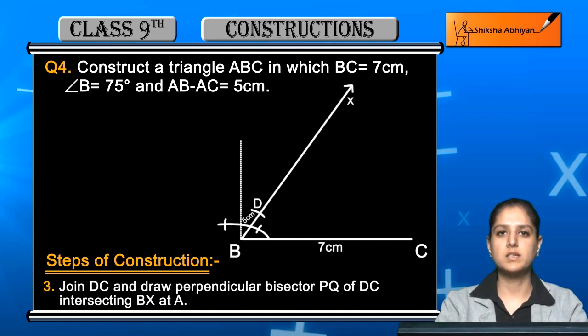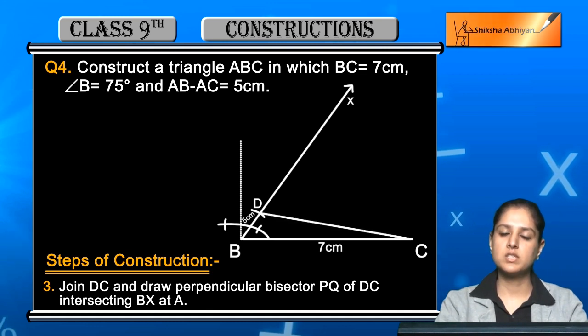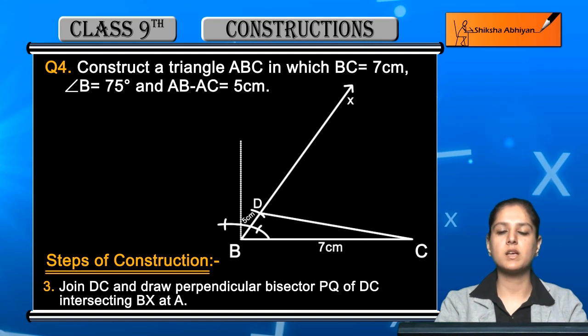Next step: Join DC and draw perpendicular bisector PQ of DC intersecting BX at A. Join DC using scale and pencil with a straight line, and draw its perpendicular bisector naming it PQ.